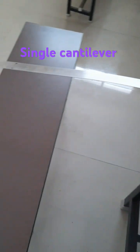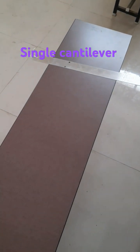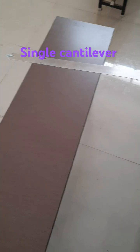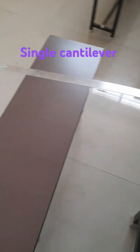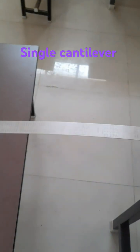This is the experimental setup for the calculation of Young's modulus of a bar by single cantilever. Measures required for this experiment are the metal strip and knife edge.